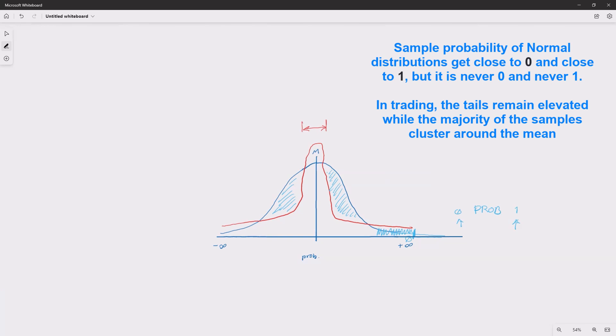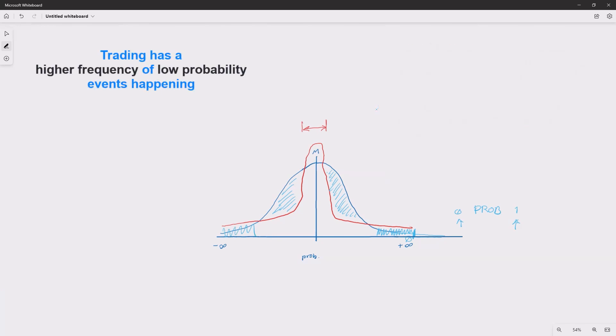Now in case of trading, there is a distance here. This gap is actually big and it doesn't close. It doesn't go much lower on both sides. And what this tells you is that there is higher probability of low probability events happening.